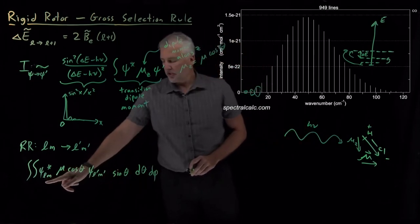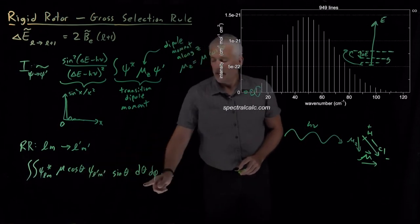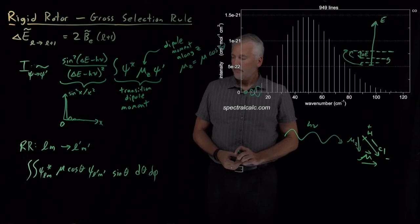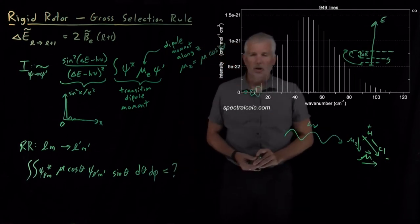We need to know what the initial and what the final wave functions are, and then we've got the dipole moment term, and integrating over theta and phi. So the question is, when is that integral large and when is it small?